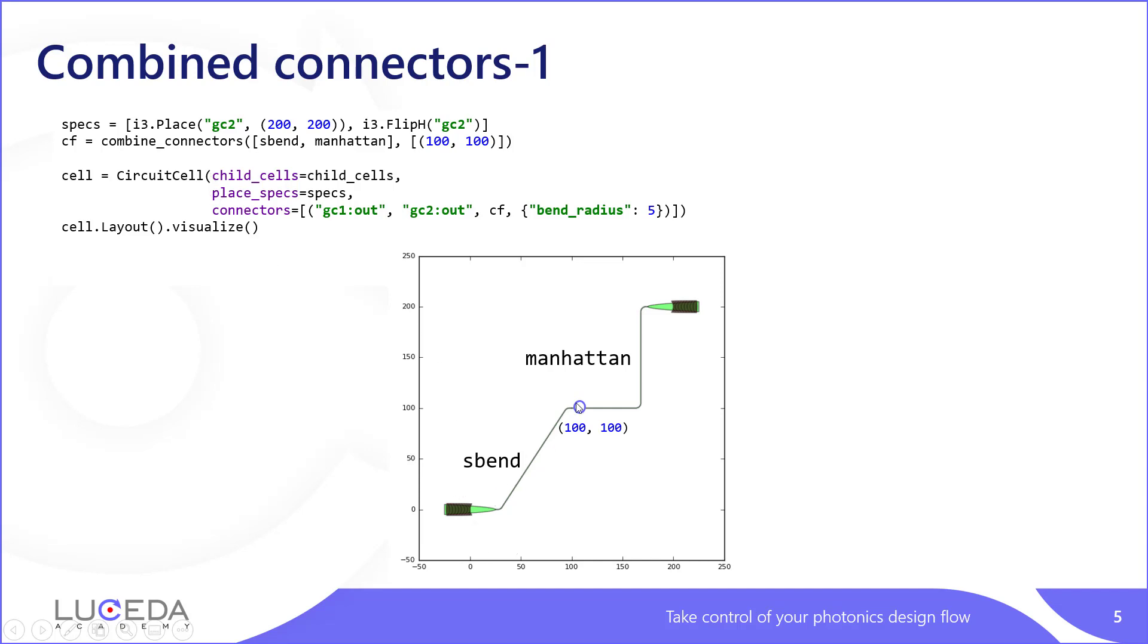So, first section you have an S-Bend all the way up to 100-100, and then you have a Manhattan section. This can be then put into the circuit cell just as any other connector. Also properties of the individual connectors can be passed on, such as the bend radius will apply to all the individual components.